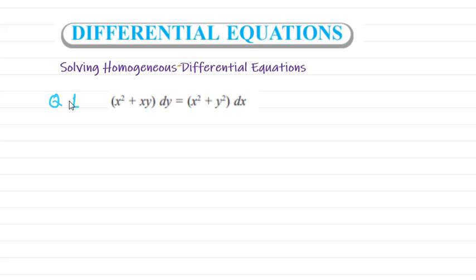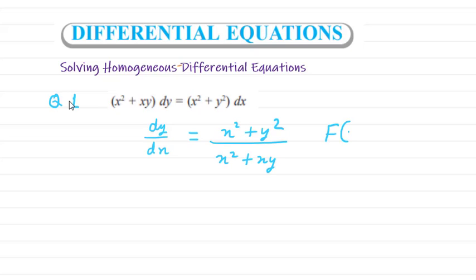Here we have the equation x² + xy·dy = (x² + y²)dx. We can rewrite this as dy/dx equals x² + y² divided by x² + xy. This is our f(x, y), and now we'll check if it's homogeneous.